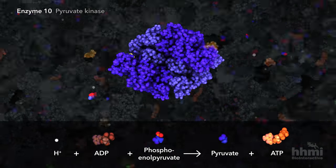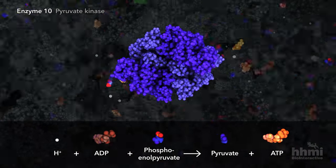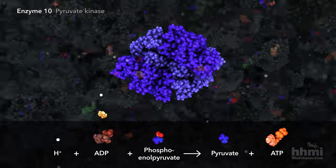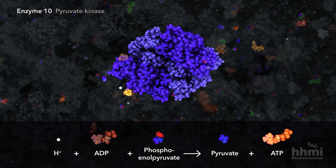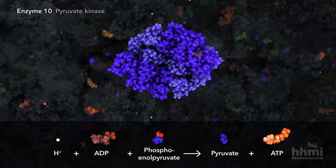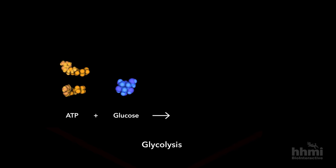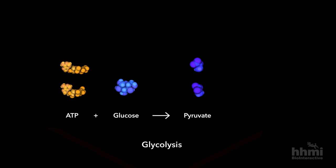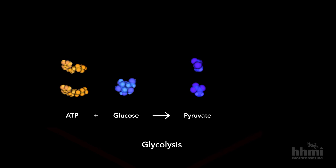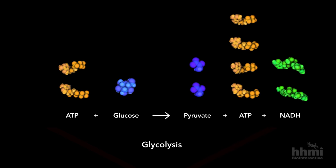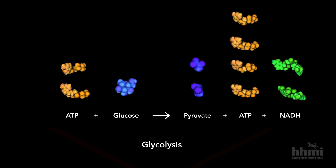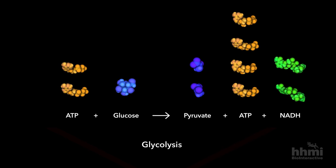Glycolysis finally produces a net gain in ATP. The glycolysis pathway breaks down glucose into two molecules of pyruvate, gaining two ATP and two NADH in the process.